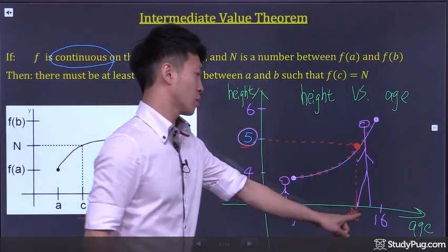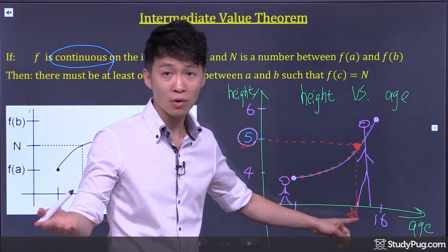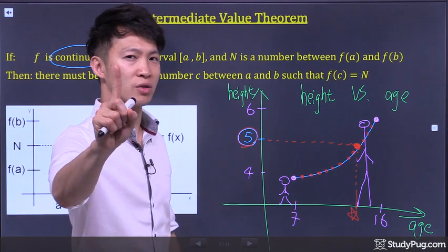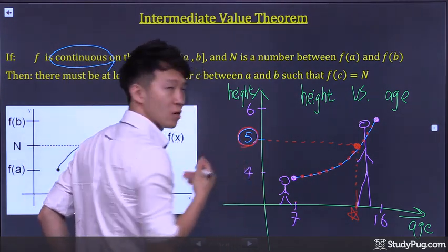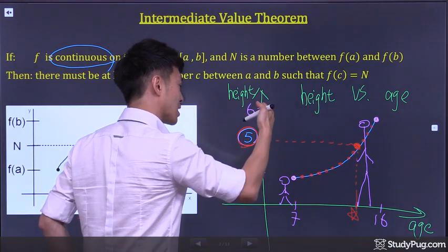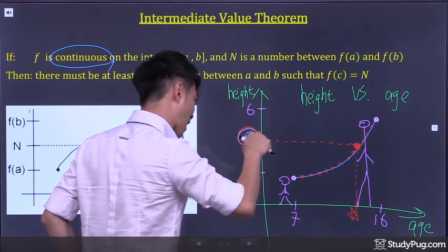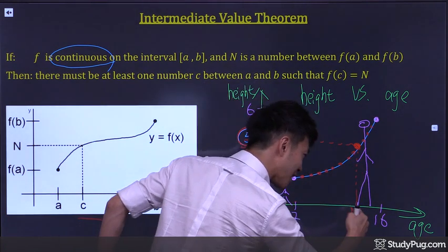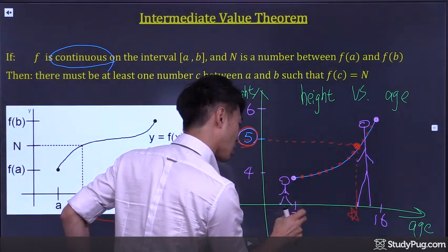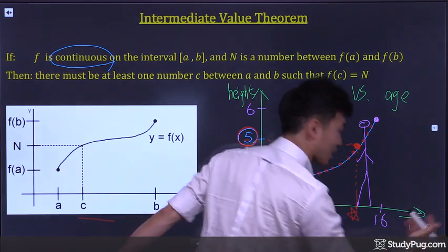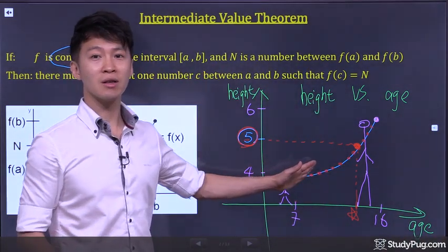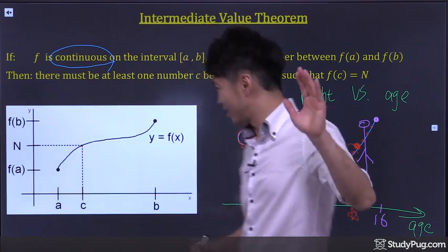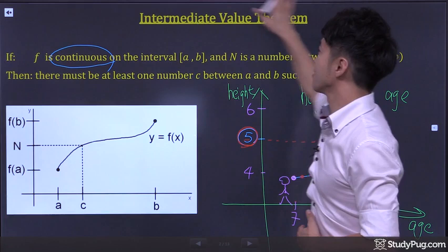Then 5 feet tall would just happen to be one of the intermediate heights. And this could possibly happen when you were, say, 10 years old, or 14 years old, or 12.5 years old. But one thing we can be certain is that 5 feet tall, being an intermediate value between 4 and 6 on the y-axis, must happen at an intermediate age between 7 years old and 16 years old on the x-axis. And that intuition is what the intermediate value theorem is all about.